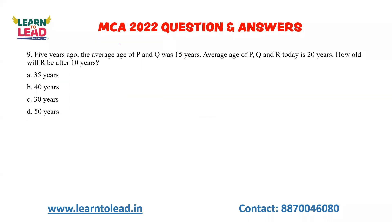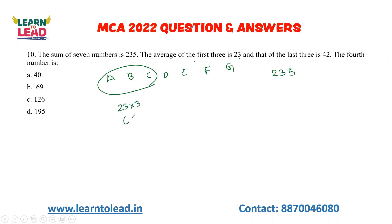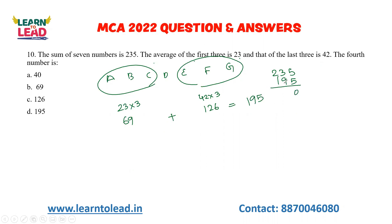Next: the sum of 7 numbers is 23, the average of first 3 is 23, and the average of the last 3 is 42. What is the 4th number? First 3 total: 23 × 3 = 69. Last 3 total: 42 × 3 = 126. So the 4th number = total sum minus 69 minus 126. That gives the fourth number as 4.